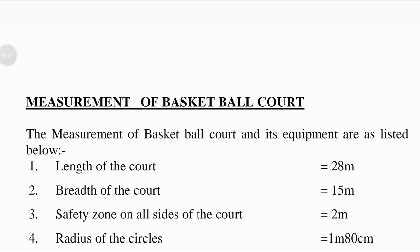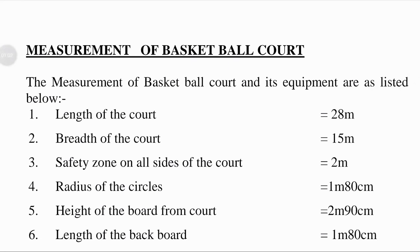Hello friends, today our topic is measurement of basketball court. Measurement means the action of measuring something, or the size, length, or unit system of measuring. Basketball is a game played between two teams of five players in which goals are scored by throwing a ball through a netted hoop fixed at each end of the court. A court is a quadrangular area, either open or covered, marked out for ball games. The measurements of basketball court and its equipment are listed below.